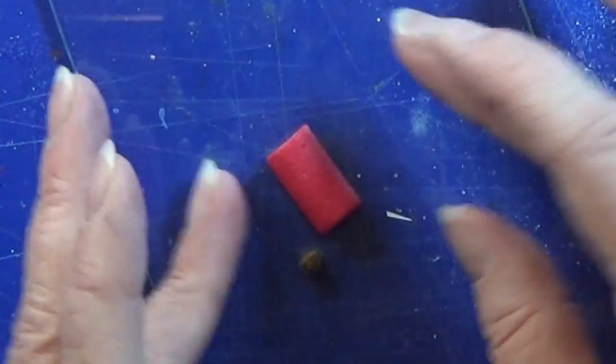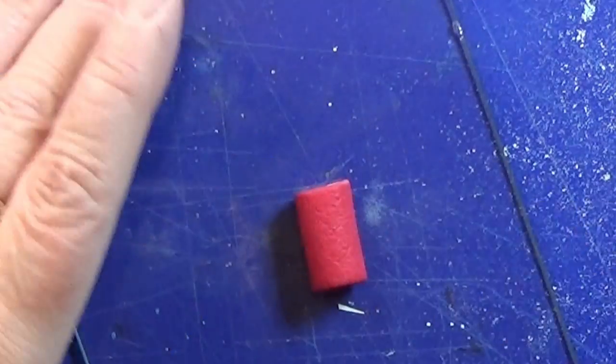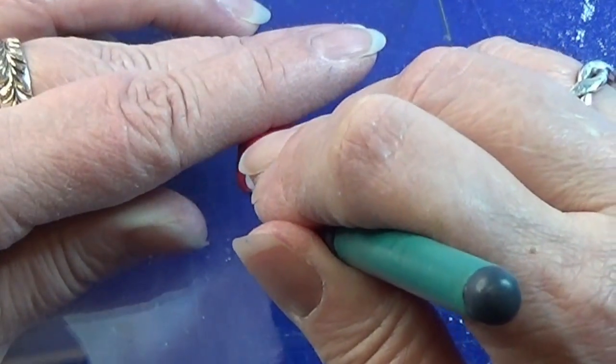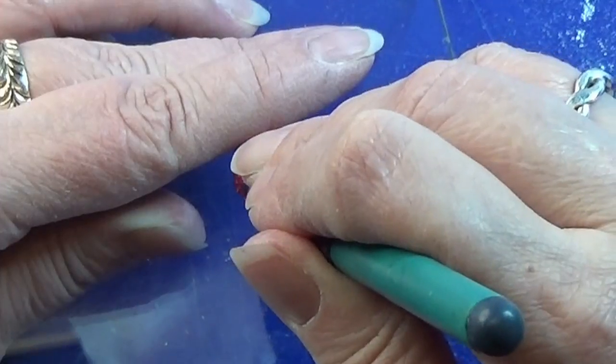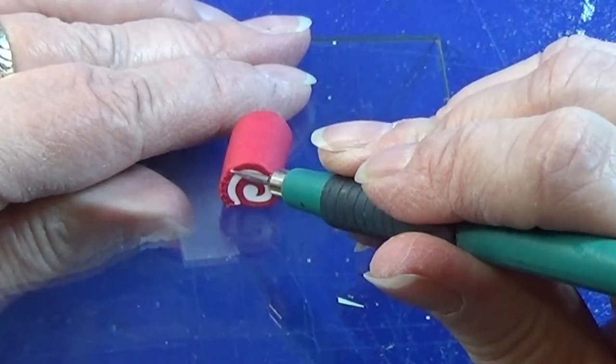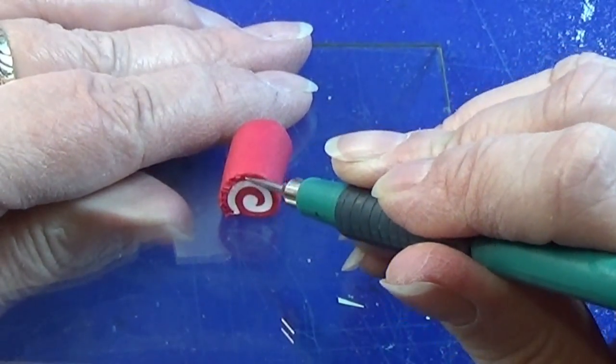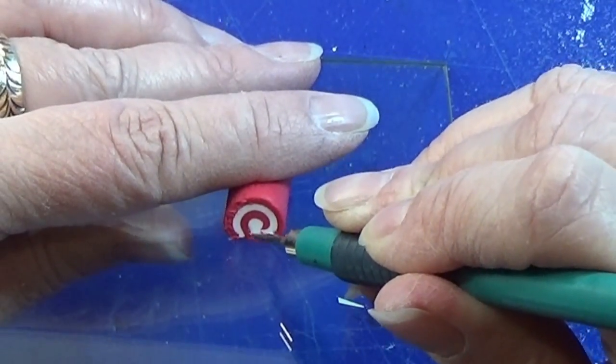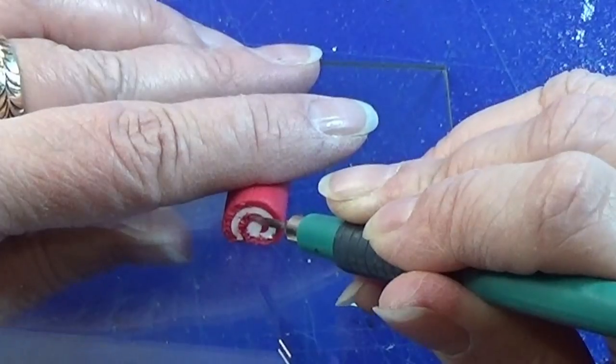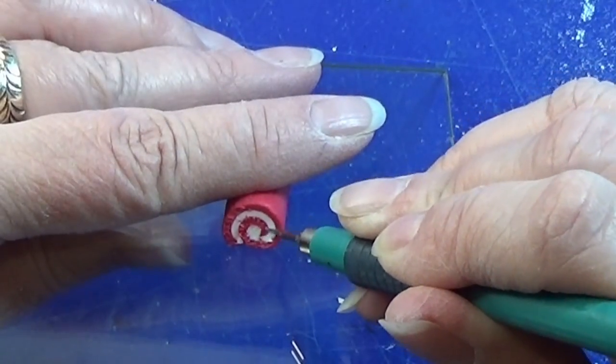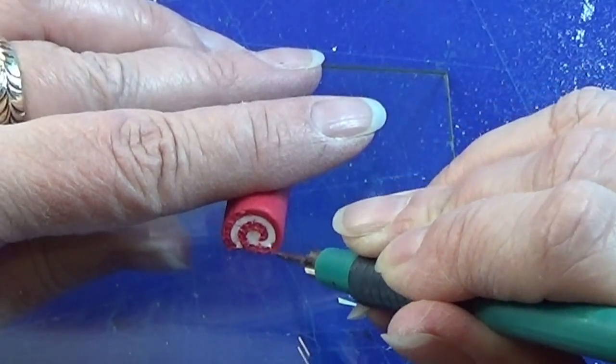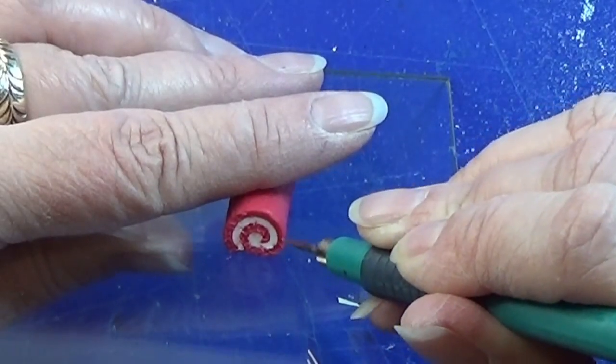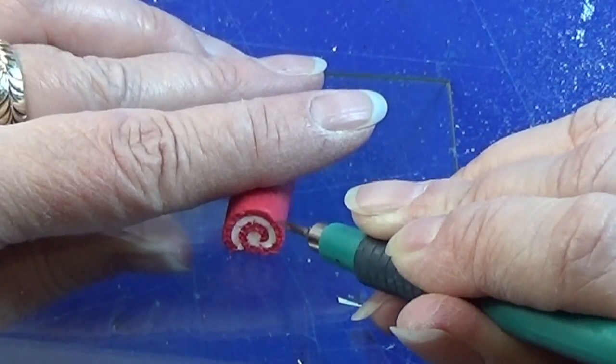I'm using my needle tool to make some texture in the ends of the cake. I'm scratching into the clay, only in the red part, and doing it in both ends so it doesn't look weird when you're done.